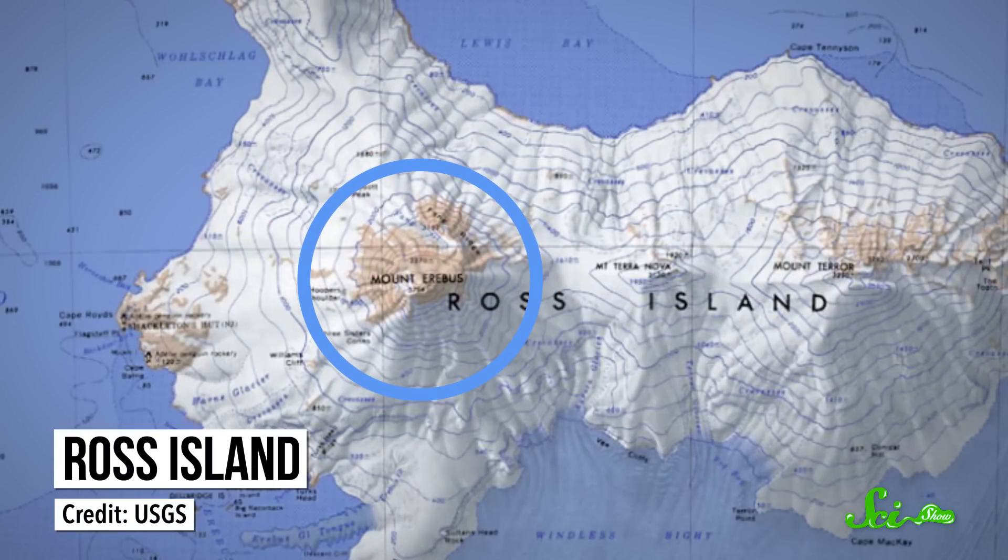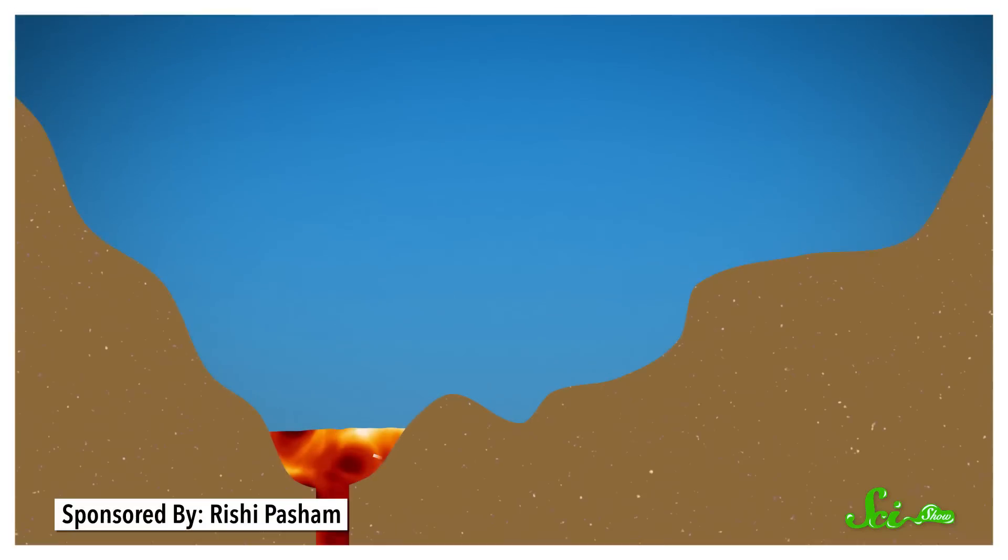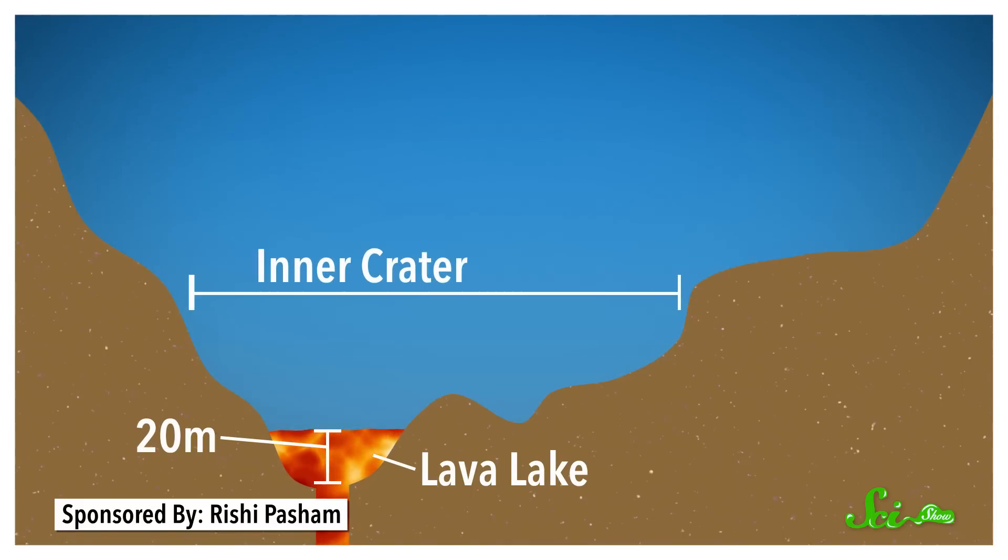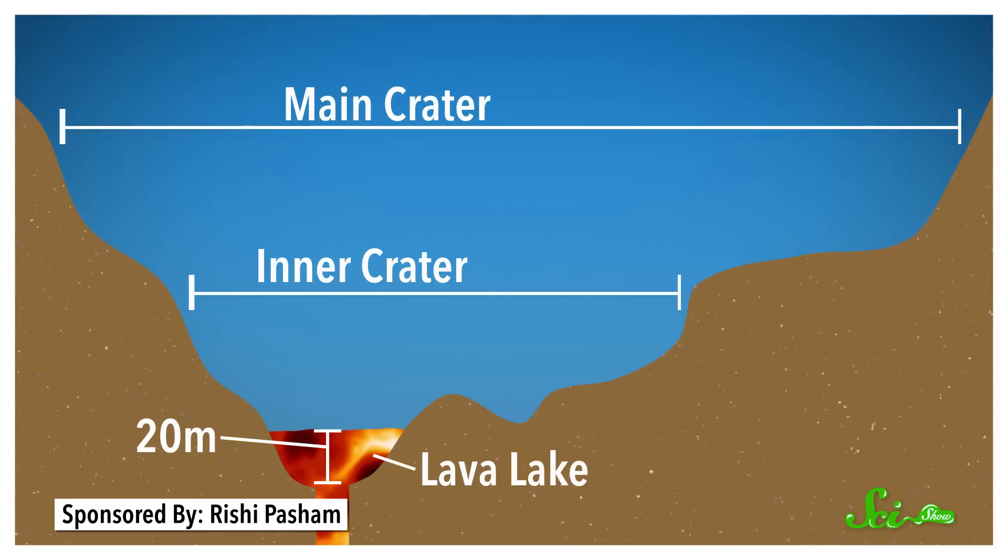Mount Erebus is the tallest peak on Ross Island, which lies close to the Antarctic mainland, usually connected by ice sheets. It's an active volcano that's been bubbling away for decades, occasionally throwing off larger eruptions. The lava lake is around 20 meters deep, and it sits in a crater which is itself inside of Mount Erebus's main crater.